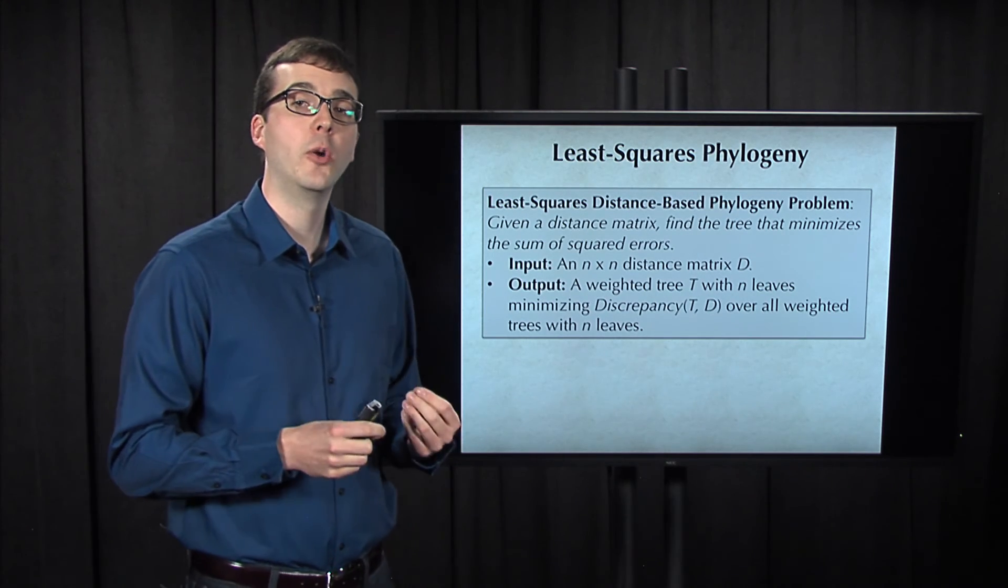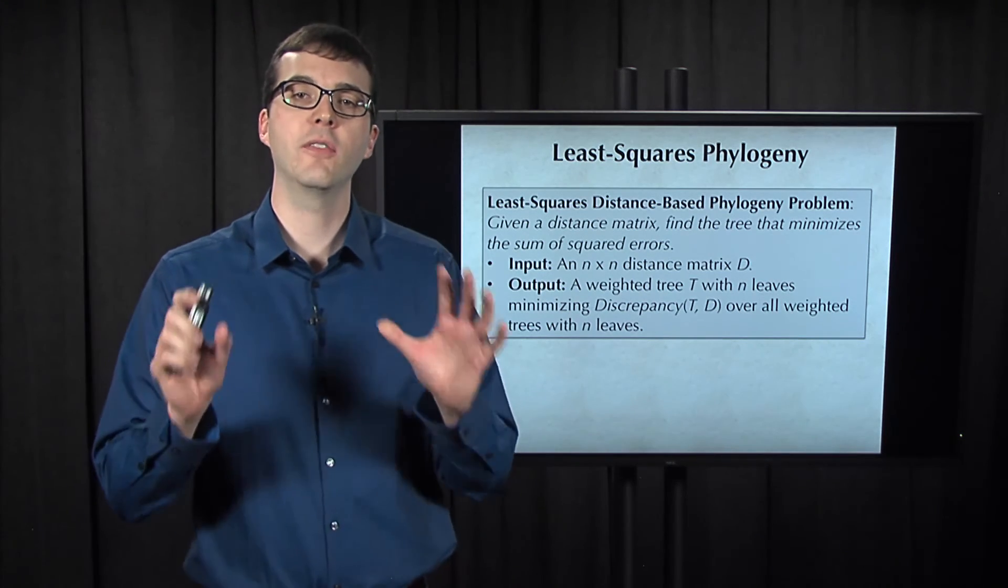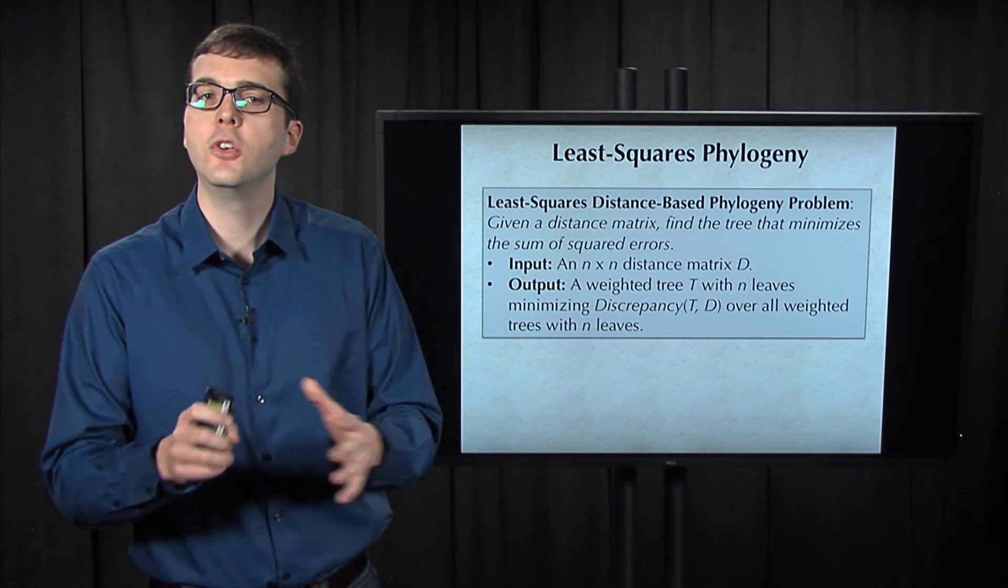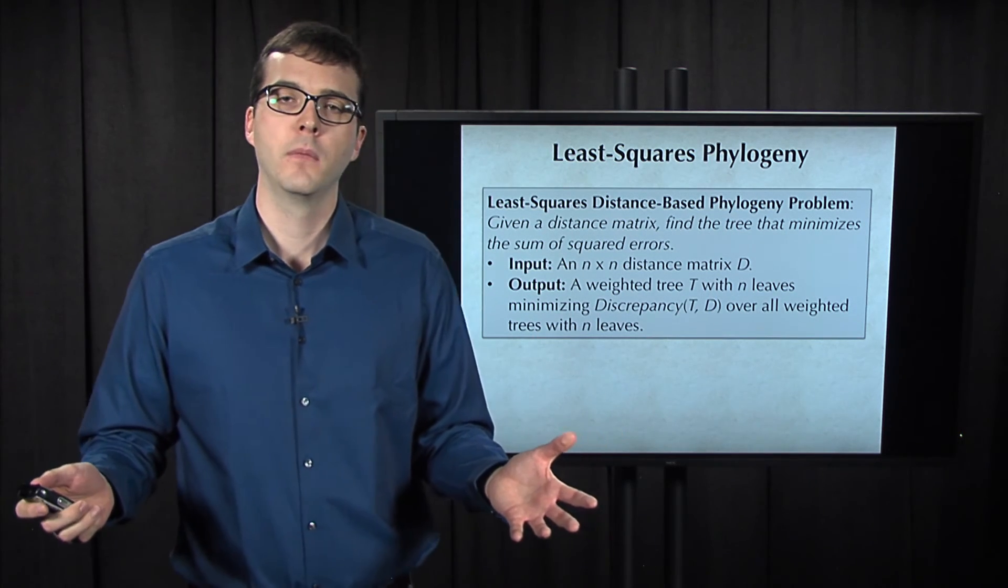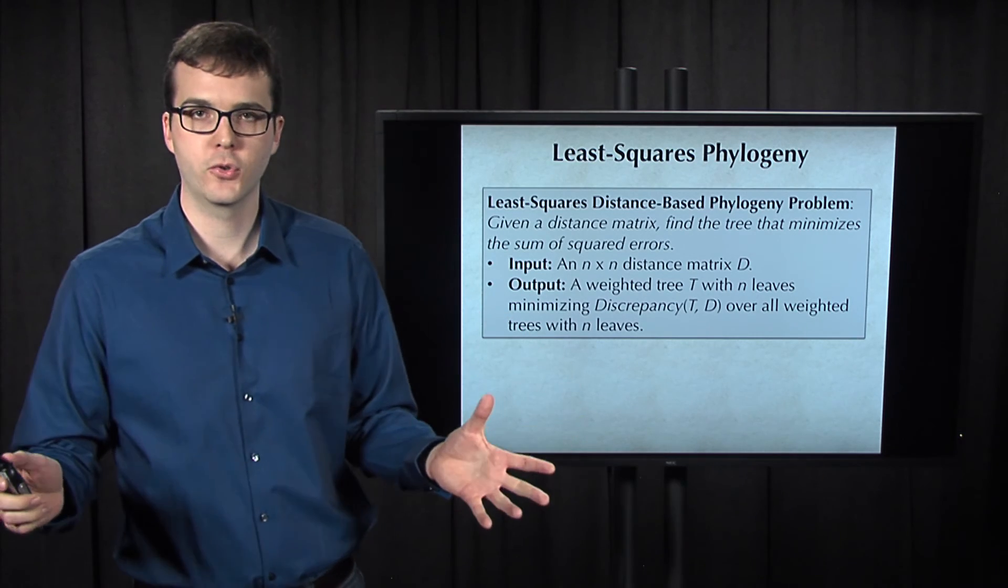In general, there is a polynomial algorithm that will minimize the sum of squared errors if we are given the structure of the tree T in advance. But in practice, we're not going to know the structure of the tree in advance, so we'll need to minimize the sum of squared errors over all possible tree structures.